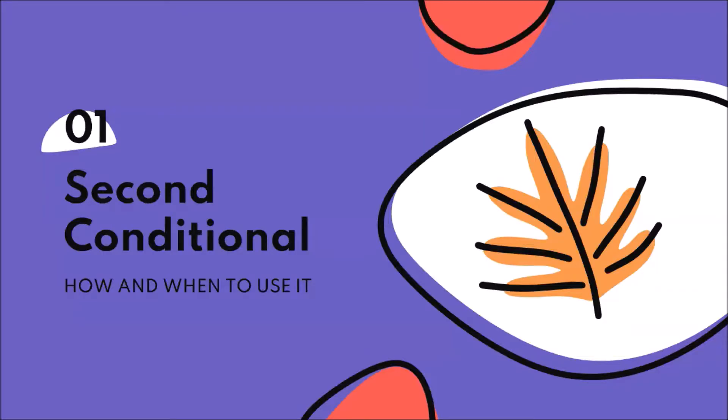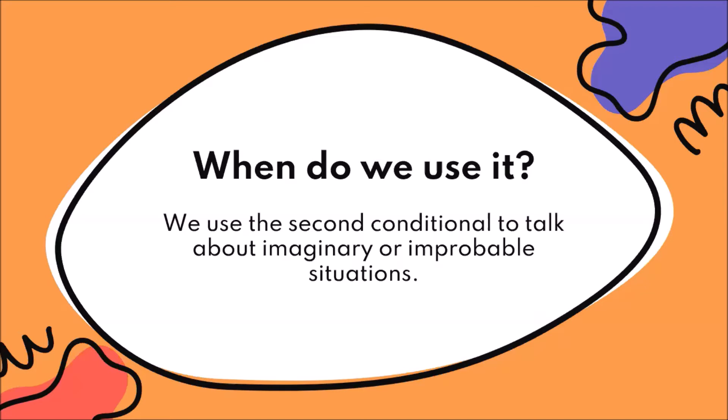So, how and when do we use the second conditional? We use the second conditional to talk about imaginary or improbable situations. All of the situations in the examples are imaginary, improbable, or unlikely. They are not happening right now — they are imagining that if something happened, they would do another thing. So if we say 'if I won the lottery,' that is an improbable or imaginary situation — it is unreal.